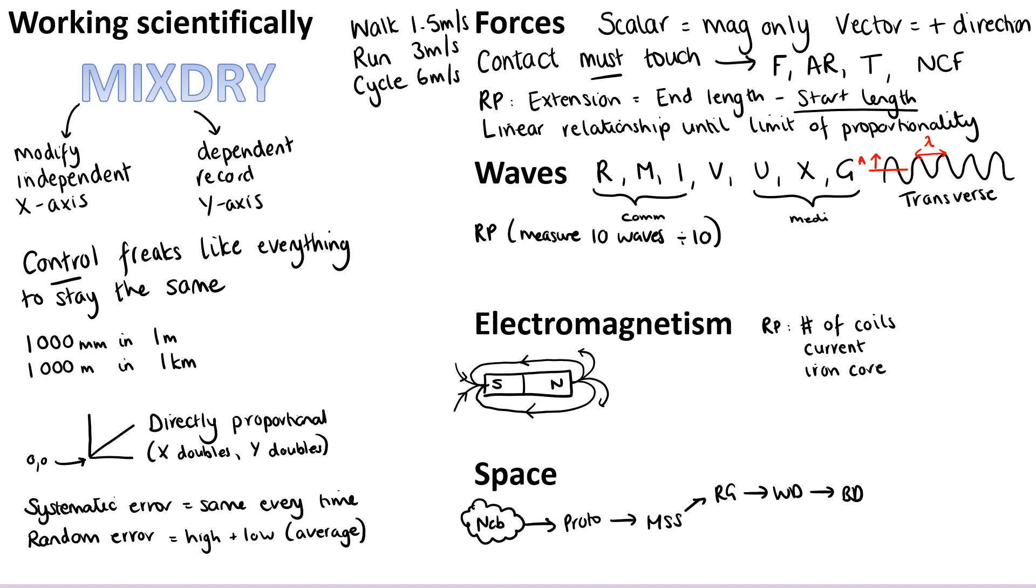Then if you're doing the GCSE physics, you've got the space topic, and you might want some reminders in there about the life cycle of a star. So how we start with a nebula, that sort of big cloud of gas and dust, and from that we form a protostar, which goes to a main sequence star. And then depending on the size, it could either become a red giant and a white dwarf and a black dwarf, or if it's a lot bigger, it might be a red supergiant. And then we have a supernova and then a neutron star or a black hole.